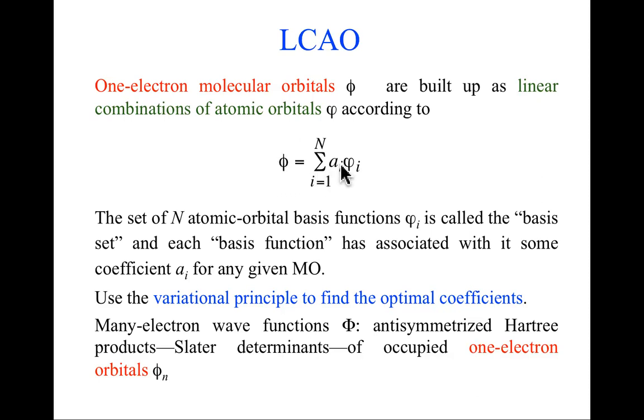The point is I have these free parameters, these small a values, and what I'd like to do is optimize the a values for a given molecular orbital. That's what the variational principle can allow me to do.